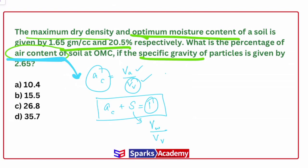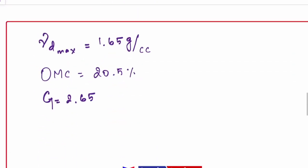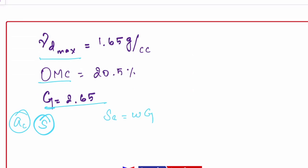With the given data — maximum dry density, OMC, and specific gravity G — we can calculate the degree of saturation S, and from that we can find the air content. The key relationship to use is Se = wG, where S is degree of saturation, e is void ratio, w is water content, and G is specific gravity.